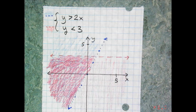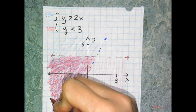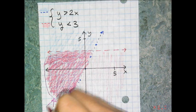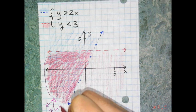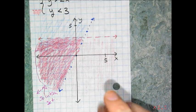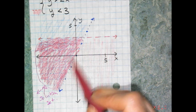So this part here is the solution set. This whole region right here that goes on forever in that direction, that is the solution set. And that's what you're looking for when you graph systems of inequalities, you're looking for where they overlap.